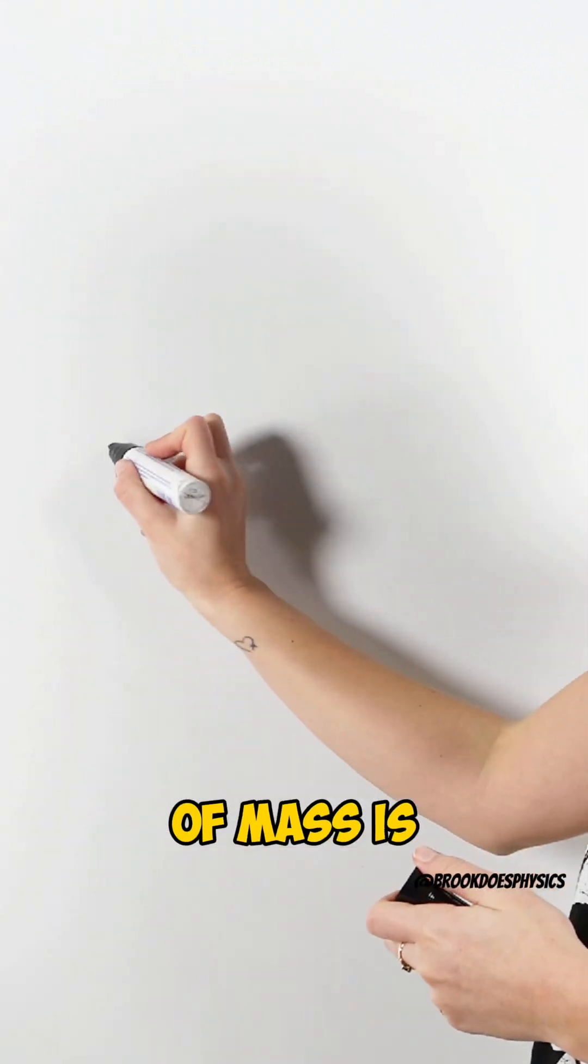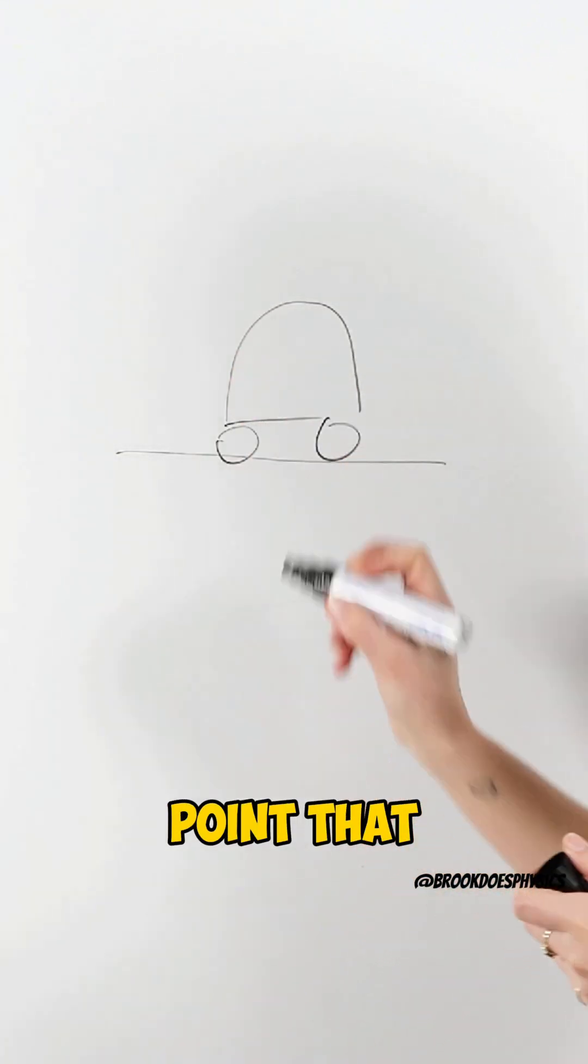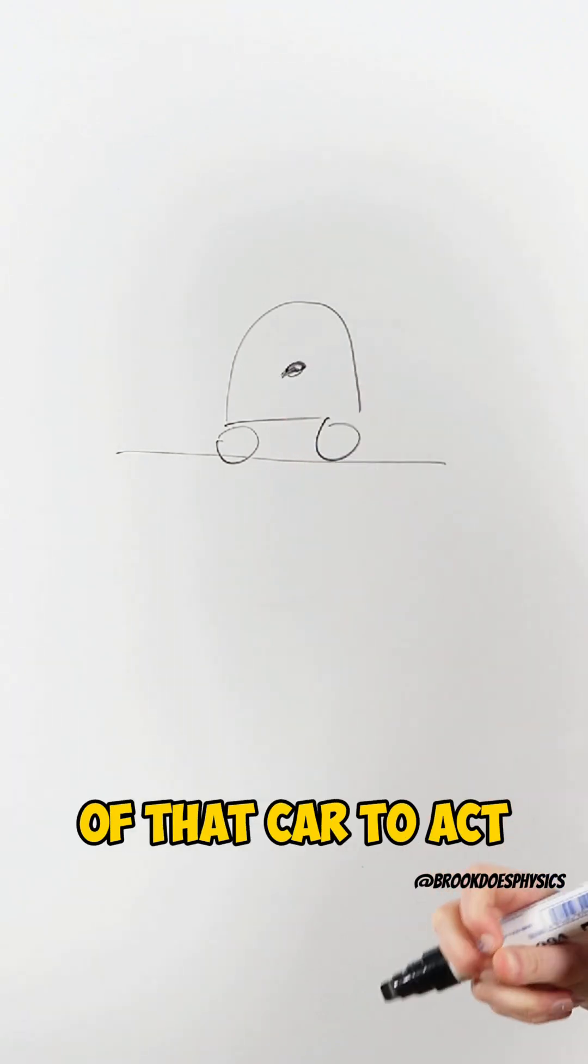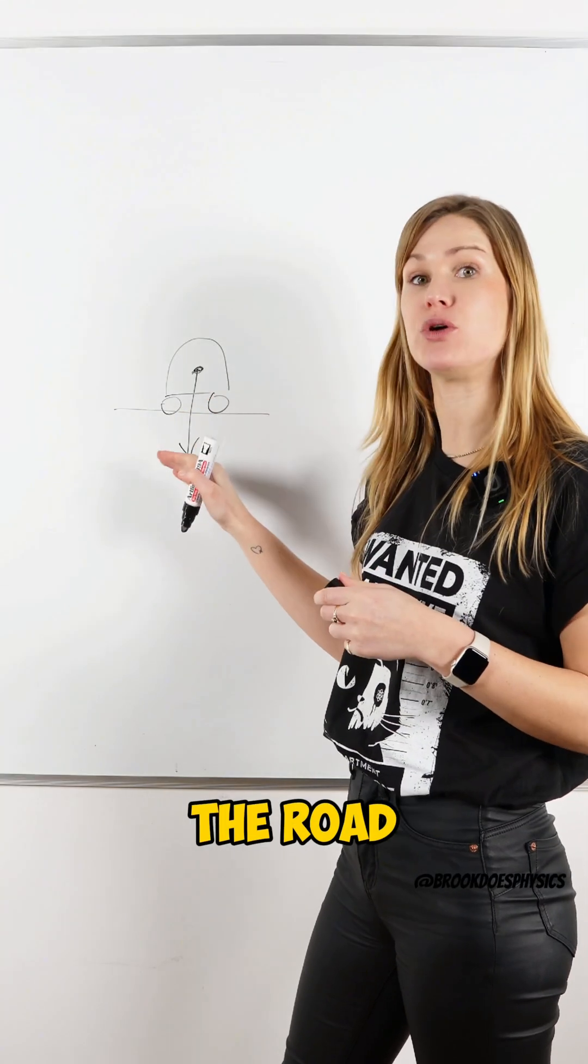What happens with center of mass is, let's say we have a car on the road. The center of mass is the point where we consider all the weight of that car to act. If it acts through its base, that's how we know it's stable and it's going to stay on the road.